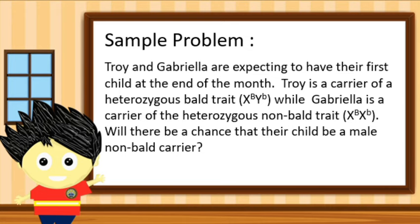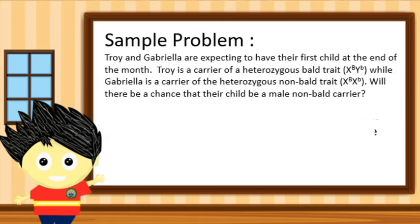Troy and Gabriela are expecting to have their first child at the end of the month. Troy is a carrier of a heterozygous bald trait while Gabriela is a carrier of the heterozygous non-bald trait. Will there be a chance that their child be a male non-bald carrier? In solving a genetic problem, we follow a step-by-step procedure. Step 1: we need to identify the gametes of the parents based on the problem.